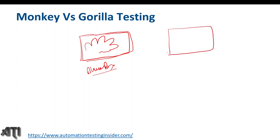Now let's talk about gorilla testing. Gorilla testing is rather more focused and calm than monkey testing. It focuses on a particular module, and it is part of unit testing. There are certain plans to execute gorilla testing, and it is part of white box testing. The user should have an understanding of the system's internal architecture and coding in order to perform gorilla testing. So monkey testing is part of system testing, while gorilla testing is part of unit testing.